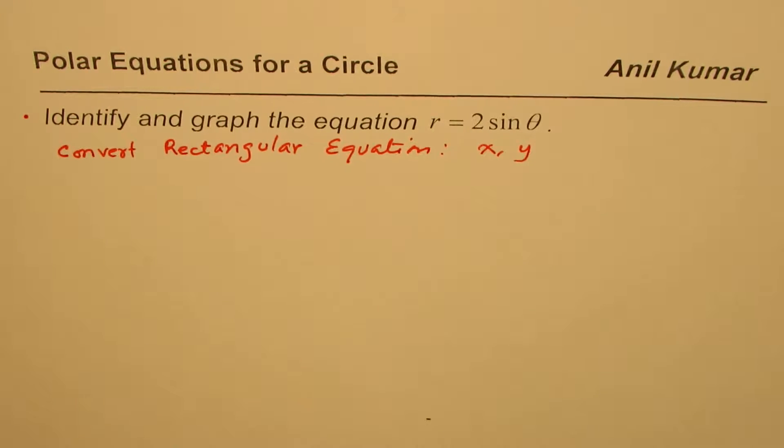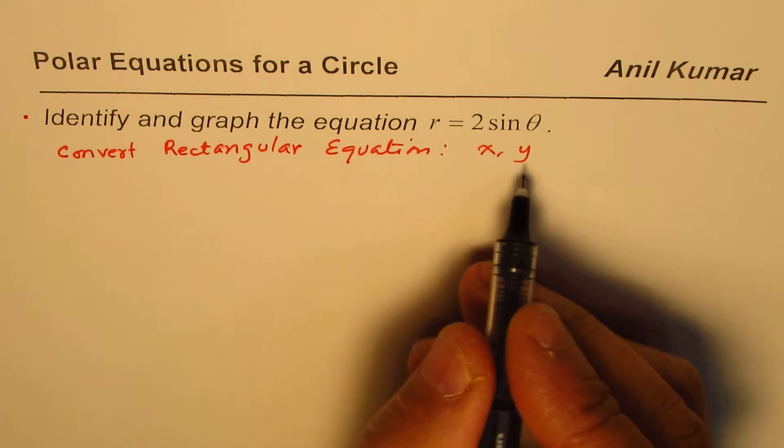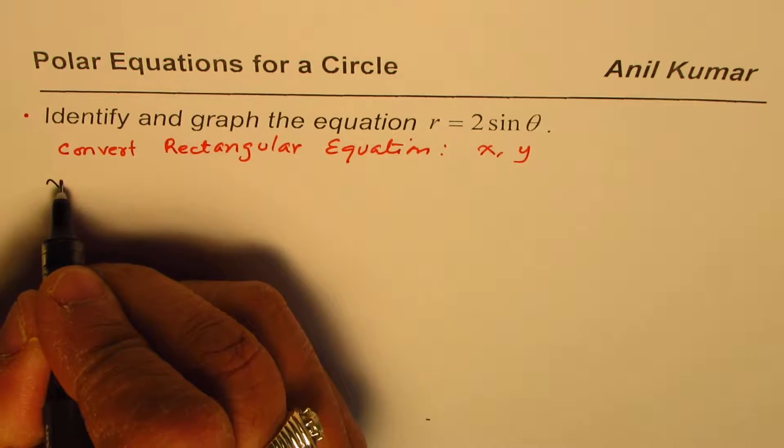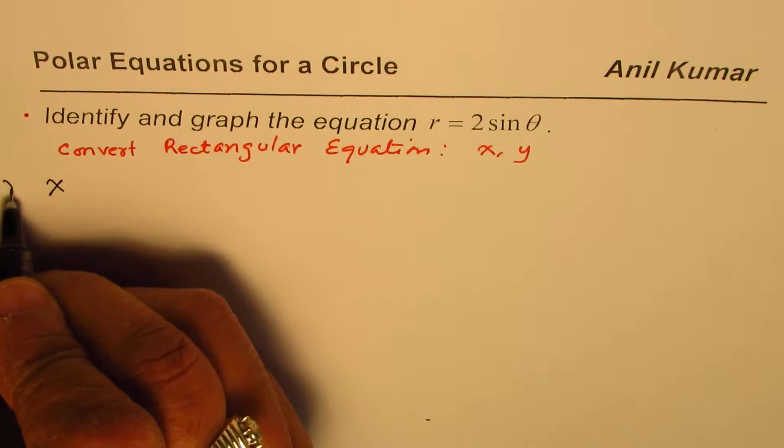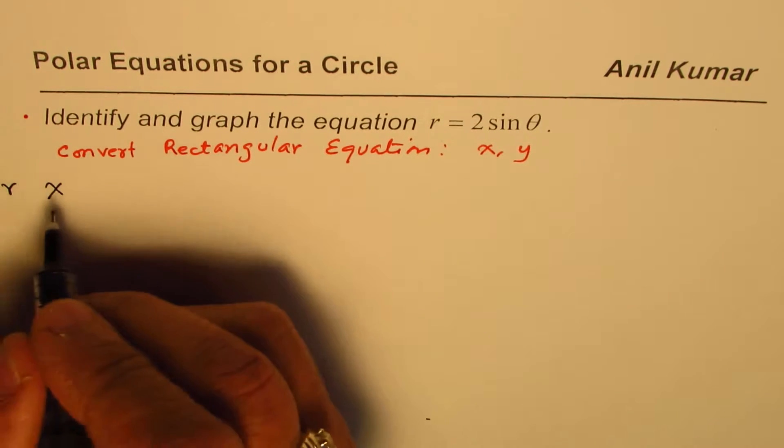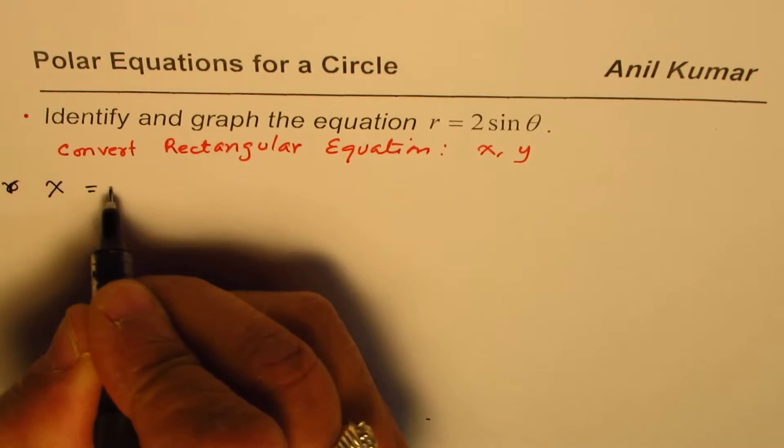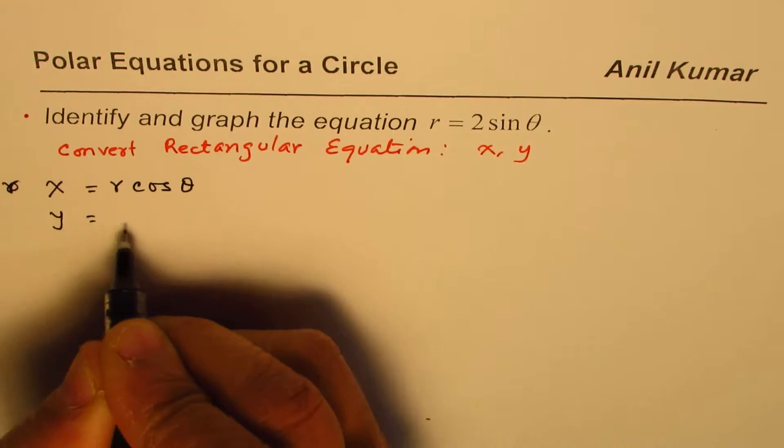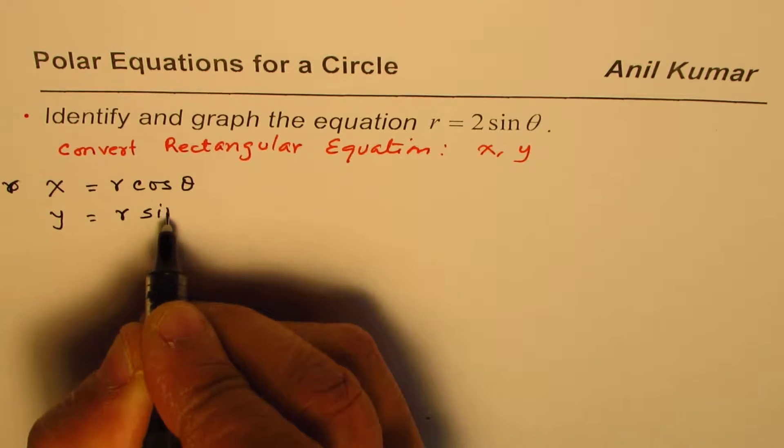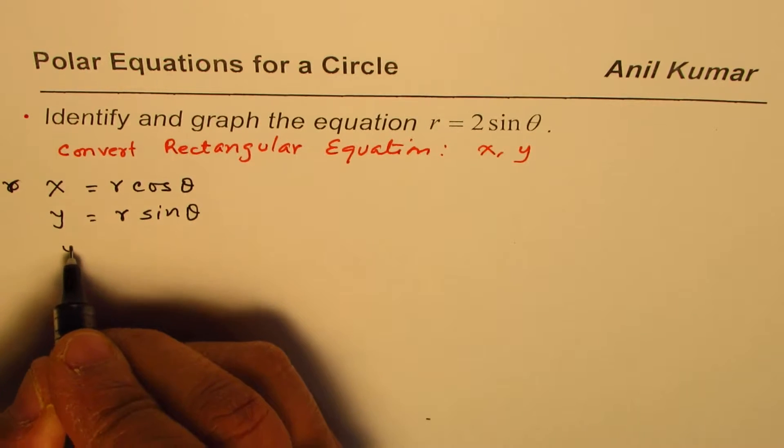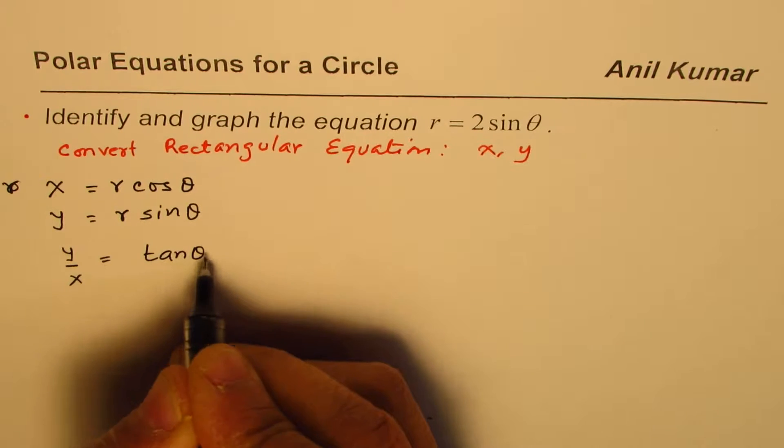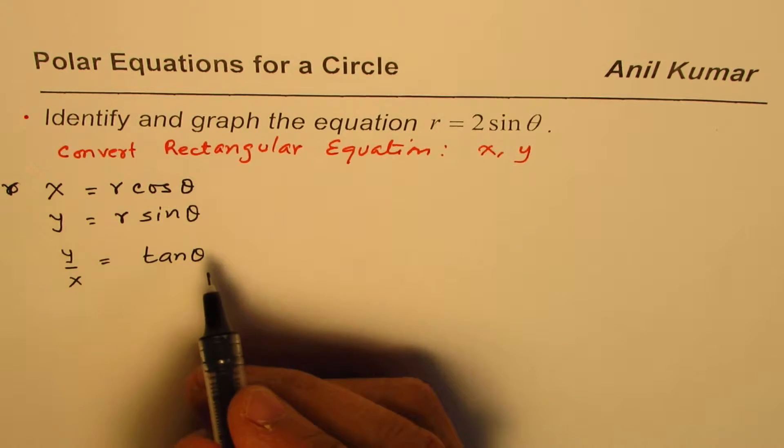As you know, the conversion into x and y is like this: x equals r times cos theta, y equals r times sine theta, and the ratio y over x is tan theta. That is the conversion between the angle and x and y.